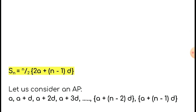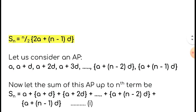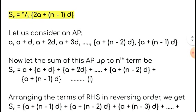For derivation, let us consider an arithmetic progression. The terms are: first term a, second term a plus d, third term a plus 2d, then a plus 3d, and so on. Just before the nth term is a plus (n minus 2)d, and the last term, the nth term, is a plus (n minus 1)d. Let the sum of the arithmetic progression up to the nth term be S_n. So S_n equals a plus (a plus d) plus (a plus 2d) plus ... plus (a plus (n minus 2)d) plus (a plus (n minus 1)d). Call this equation number 1.